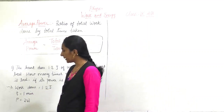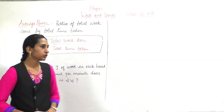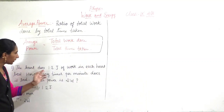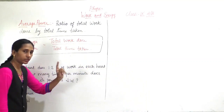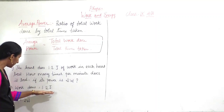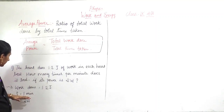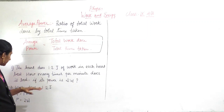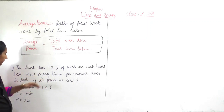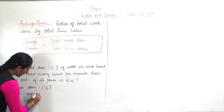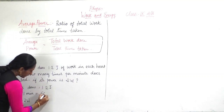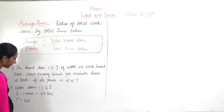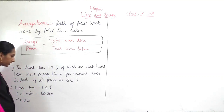So the data given: work done is 1.2 joules for each heartbeat. Time T is equal to 1 minute. Now we will convert this minute into seconds — 1 minute equals 60 seconds. And power is equal to 2 watts.